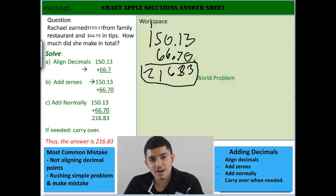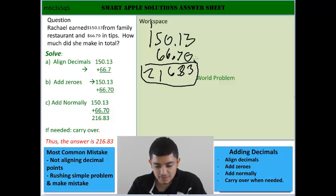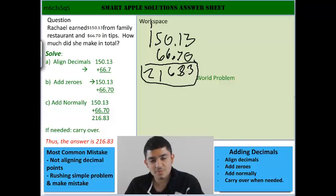Most common mistakes that you might have in this problem is not aligning the decimal points, so that might have you mistake a point and then have you add the wrong decimals together. Also, you might make a mistake when you're rushing a problem, especially since it's a word problem, so make sure to take your time on these word problems.